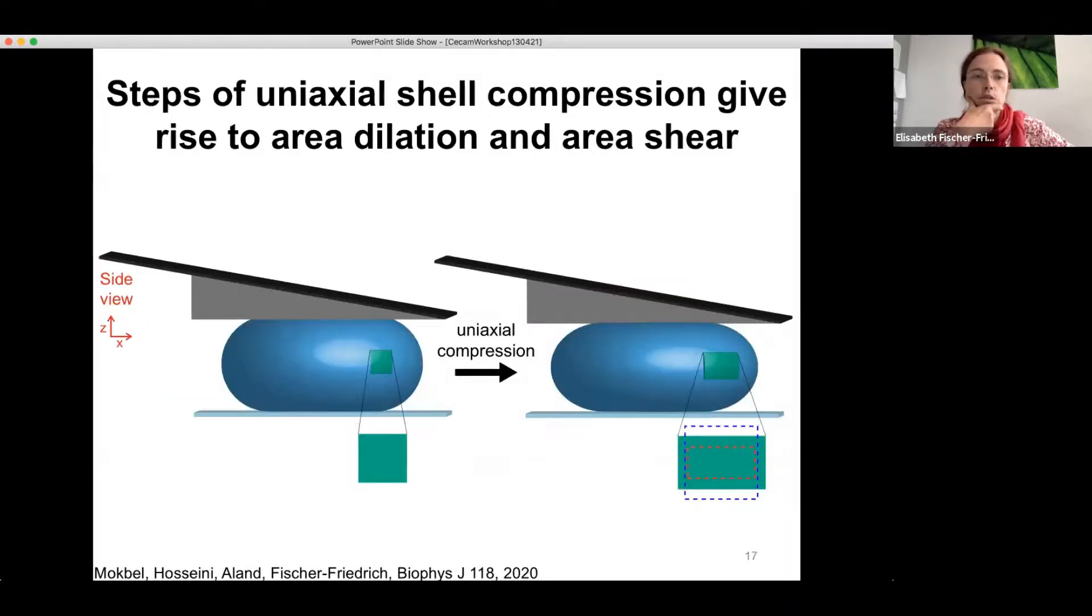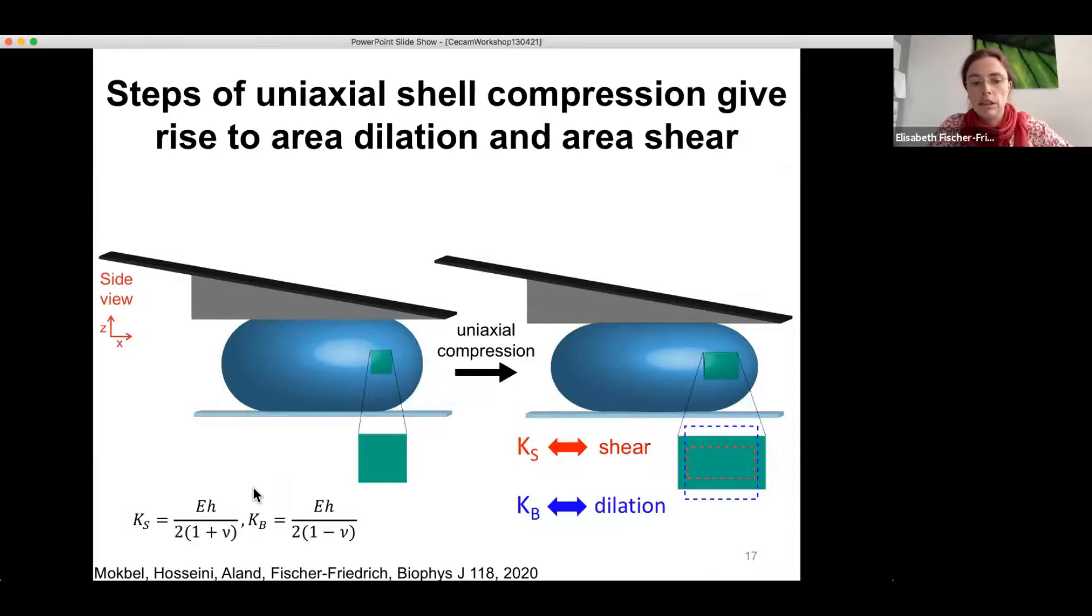Okay. And we for this also used this AFM cell confinement setup. So we confined cells between the two plates, waited until the new shape becomes the reference shape of the material. And then we perform a small step of uni-axial compression and thereby deform a cortical area element. And we have a certain amount of shear in response and a certain amount of dilation in response. And both area shear and area dilation are described by separate elastic parameters, the so-called area shear modulus and so-called area bulk modulus. And both can be written as functions of the Young's modulus and the Poisson ratio if we have an underlying isotropic shell material.